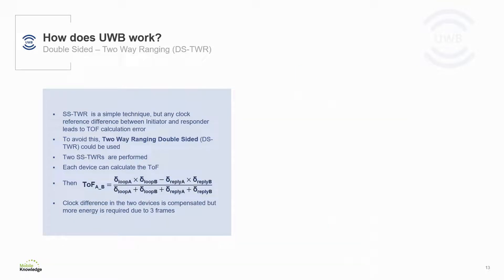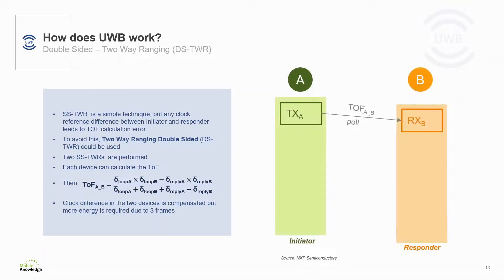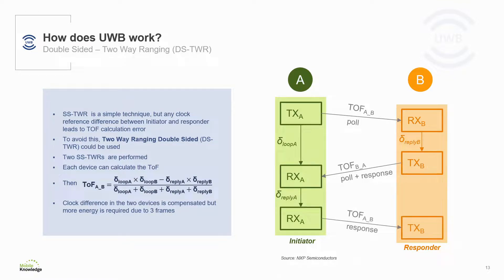To avoid this limitation, double-sided two-way ranging can be used. In double-sided two-way ranging, both the initiator and the responder perform a time of flight measure. As you can see in the slide, the initiator A sends a poll to responder B. The responder B replies to A and attaches another poll to the initiator A. The initiator A measures the round-trip time and replies to responder B. Responder B receives the polls and calculates the round-trip time as well.